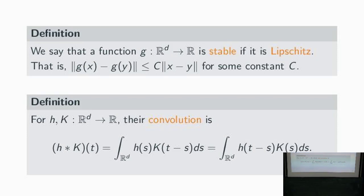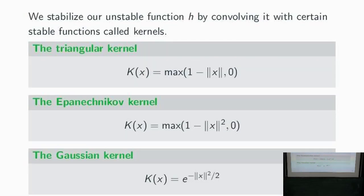The second notion is convolution. In R^d we can define convolution: whenever this integral is defined, it gives us the convolution of two functions — a new function defined pointwise by a particular integral. Our main idea from the theoretical point of view is that we stabilize unstable functions by convolving them with certain stable functions called kernels. We focus on three kernels: the first because it's really simple, and the last two because they're the most commonly used in practice by statisticians.